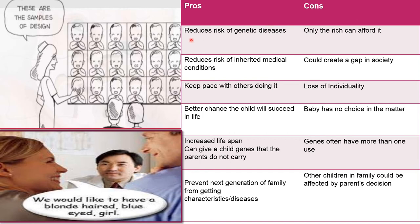The pros of designer babies include: reduced risk of genetic diseases, reduced risk of inherited medical conditions, better chance the child will succeed in life, increased lifespan, ability to give the child genes that parents do not carry, and prevention of the next generation from getting characteristic family diseases. The cons include: only the rich can afford it, it could create a gap in society, loss of individuality, the baby has no choice in the matter, genes often have more than one use, and other children in the family could be affected by the parents' decision.